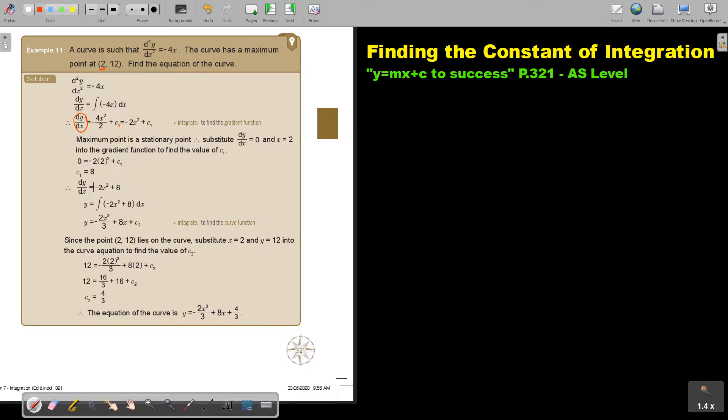Now I have my first derivative equation. I'm integrating again to find my original function. And let's call this now c2, because it's going to differ from that value. Now I know that this is a point on the curve, so I'm just going to substitute that point into that integrated function. And then I will find c2 is 4 over 3. It's not really that difficult.